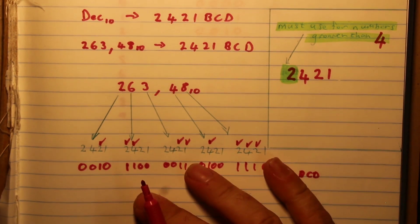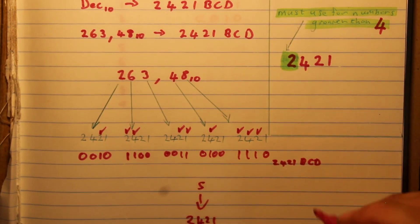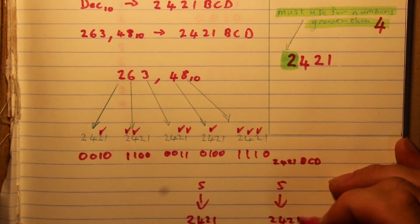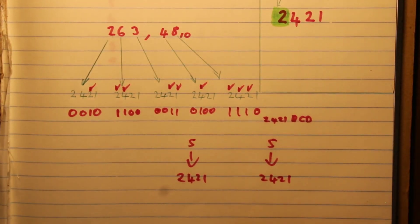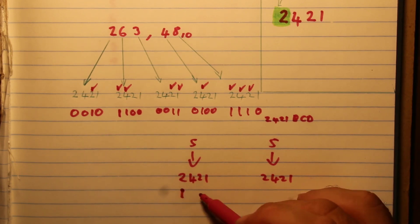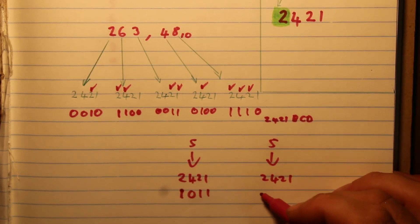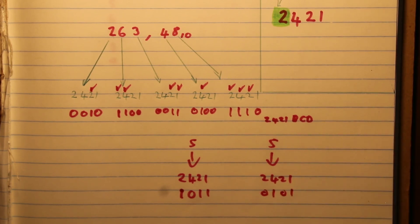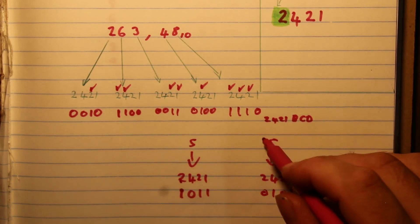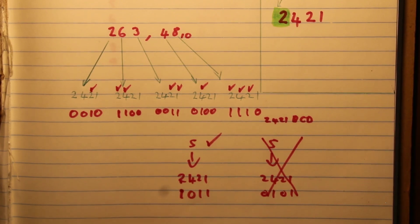Just to re-emphasize with the number five: the 2421 weights are two, four, two, one. You might think you could use four plus one, giving 0101, or you could use the second two plus the other two plus one, giving 0011. The rule says for numbers greater than four you must use that second two — so 0101 is wrong and 0011 is correct. For any number greater than four, you must always use that first positional two.